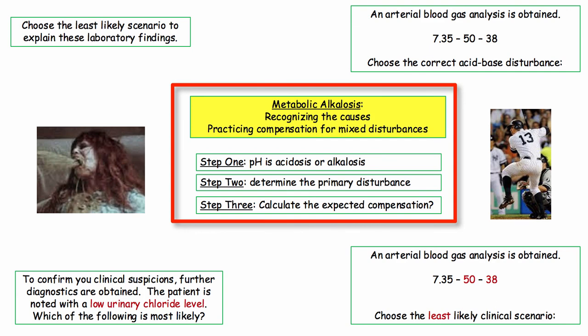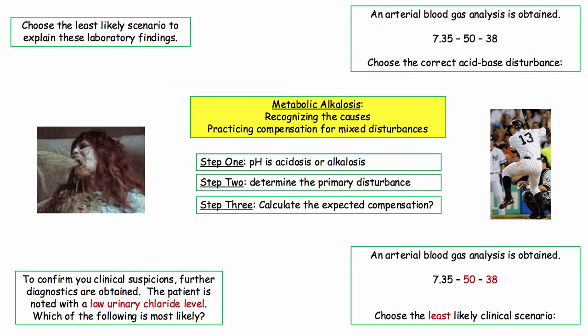So in this fun little exercise, we looked at the causes of metabolic alkalosis and how they will be presented on the boards. We addressed the tricky topic of measuring urine chloride. We also demonstrated a stepwise approach to ABG interpretation and practiced applying compensation rules to sort out a mixed disturbance. This is complex stuff, but if you develop a systematic approach, you will be able to sort these out on test day.